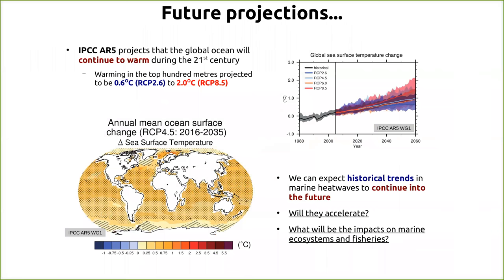Looking to the future, the IPCC projects that the global ocean will continue to warm throughout the 21st century, with the top 100 meters projected to warm up to 2°C depending on emission scenario. We can therefore expect these historical trends to continue, raising significant questions: will they accelerate, and what will be the future impacts on marine ecosystems and fisheries?